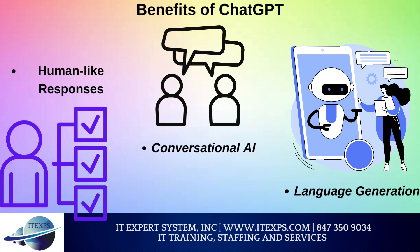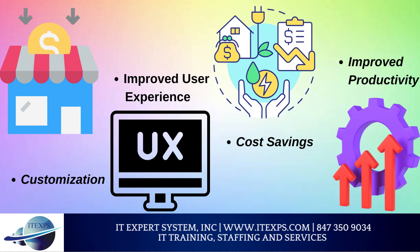Language Generation: ChatGPT can be used for language generation tasks, such as generating text summaries, captions, and articles. Customization: ChatGPT can be fine-tuned and customized to fit the specific needs of an application. This allows developers to tailor the model to the specific use case and domain. Improved User Experience: By using ChatGPT, organizations can provide users with an improved experience by providing instant, relevant, and human-like responses to their queries.